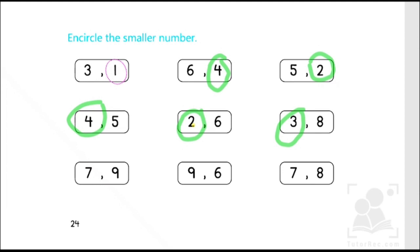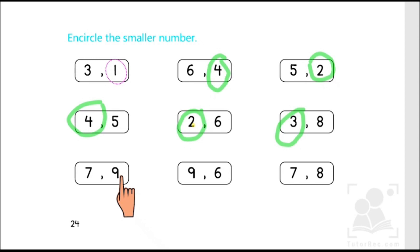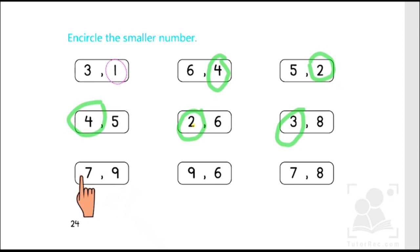The next one is also very easy, because seven comes before nine when we count from one to nine: one, two, three, four, five, six, seven, eight, and nine. Because seven comes before nine, that's why it is the smaller number.